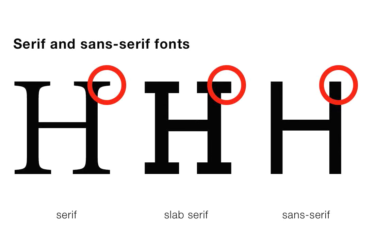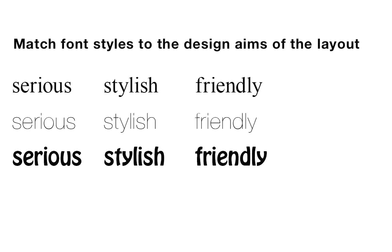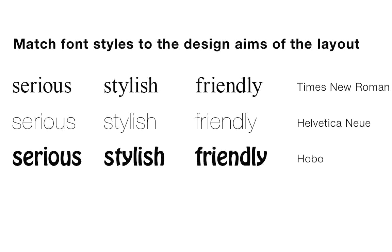Some people say serifs make the characters easier to read, and they also give the characters a different kind of feel. What you want to do is match the font style to the aim of the layout. For example, if you want the layout to look authoritative, you might use Times New Roman. The centre example, Helvetica Neue in a very lightweight, is more associated with style and design. The bottom one, Hobo, is a typeface that's more friendly, human, and playful — so if you're trying to get that feeling into your layout, that's the kind of typeface you should use.